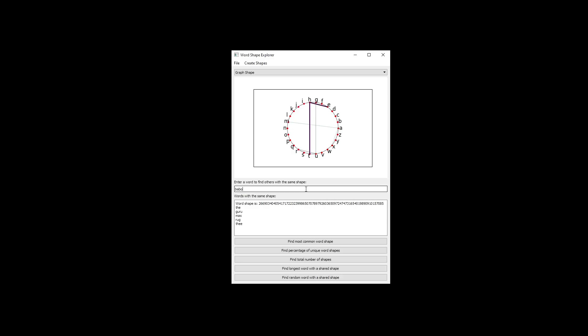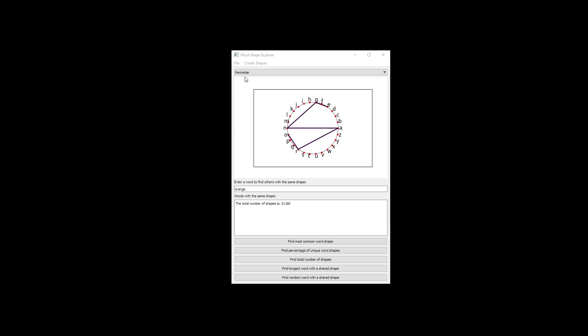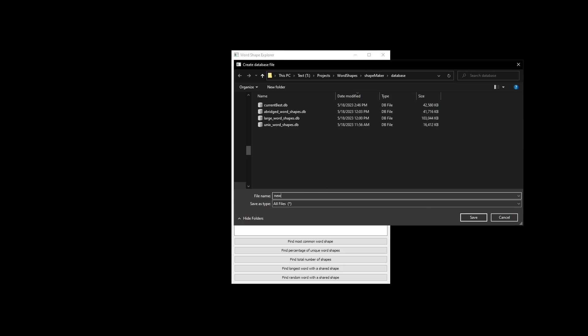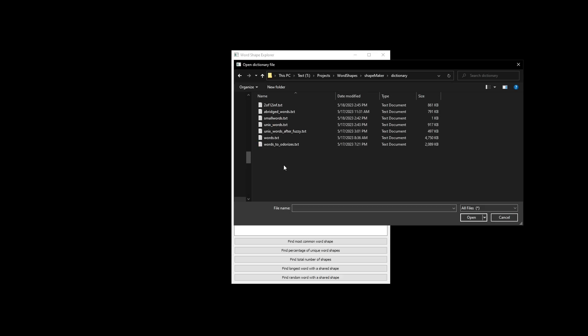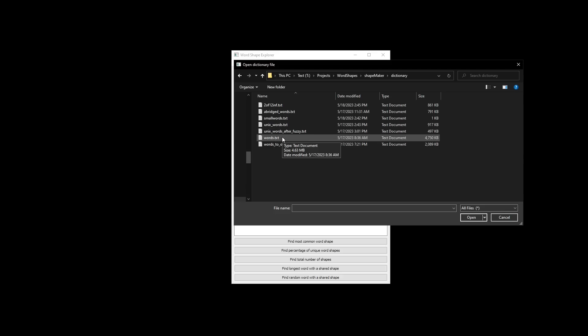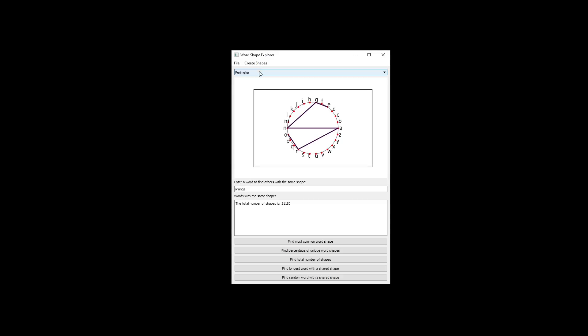There are several buttons at the bottom of the window that perform specific SQL queries on the database for convenience. To create your own word shape database with a new wordlist, go to File New Database, pick a name and location, then File Open Dictionary, and select your wordlist. Then create shapes and let the application run. Progress can be monitored in the command line.